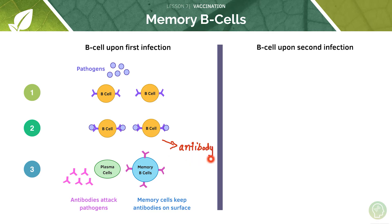We get elimination of the infection if the antibody B cell response is successful. We also get formation of memory cells which remain circulating in the blood. These memory B cells keep the specific antibody that was made against the pathogen on their surface and these continue to circulate through the blood for life.